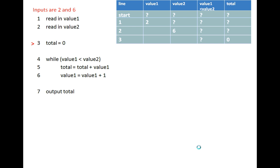Line three initializes the value of total to zero. Value one and value two are left blank to indicate they are not changed on this line, and total goes to zero. The next line executed is line four: while value one is less than value two, keep doing something. The only thing evaluated on this line is value one less than value two. Value one is two and value two is six, so two is less than six — this evaluates to true. Nothing else has changed so those remain blank in the trace table.